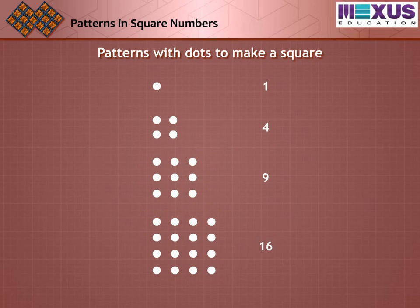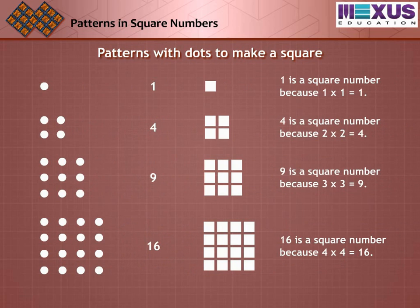So, the numbers obtained in this pattern are 1, 4, 9 and 16. These numbers are called square numbers as 1 is a square of 1, 4 is a square of 2, 9 is a square of 3 and 16 is a square of 4.